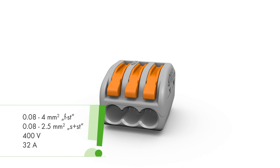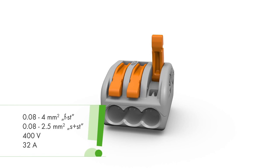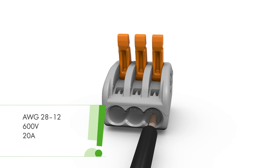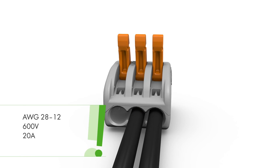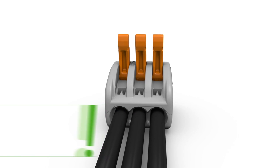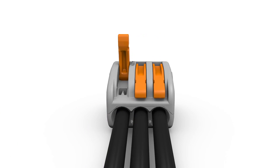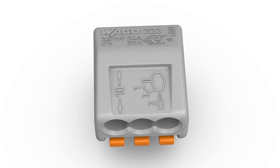The 222 series splicing connectors, equipped with cage clamp, compact terminates solid, stranded, and fine stranded conductors without tools for wiring.